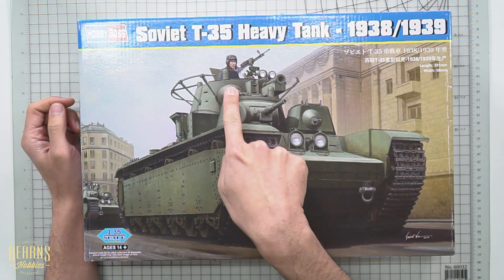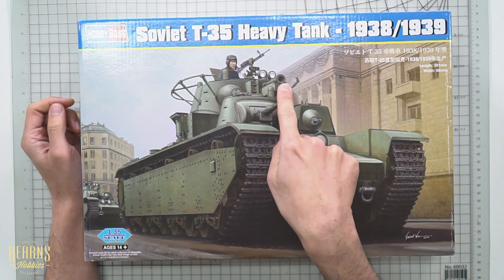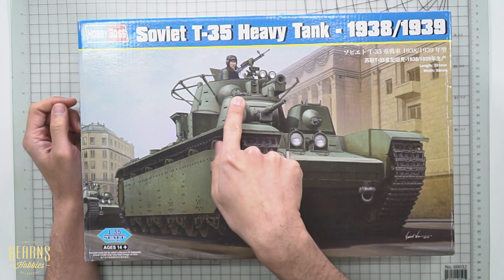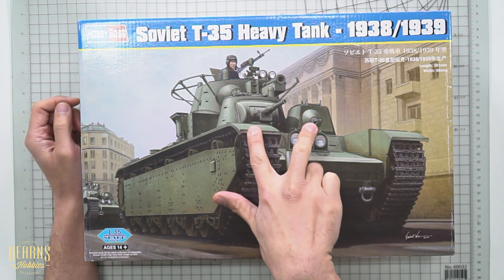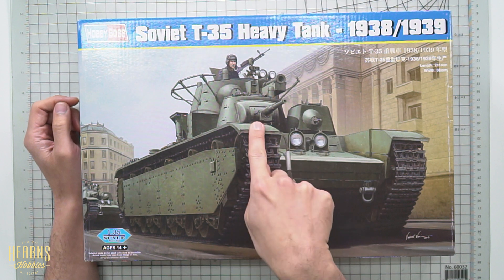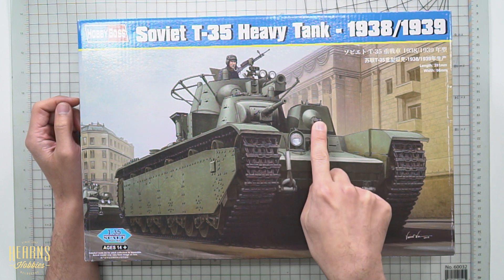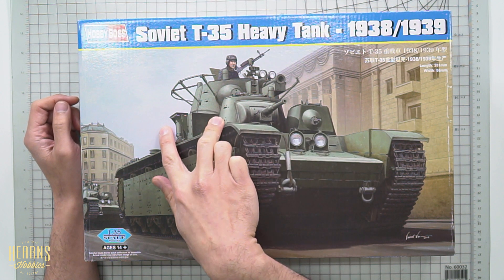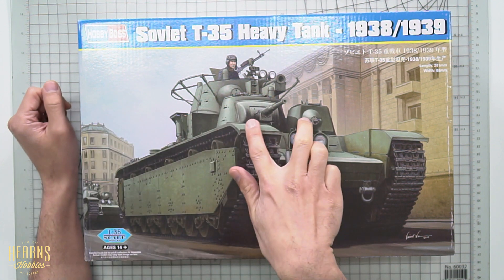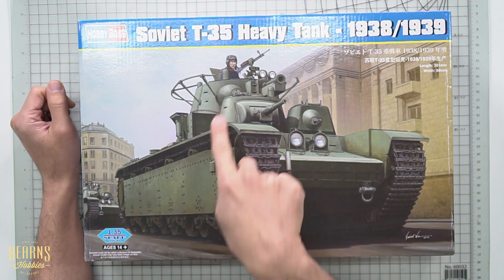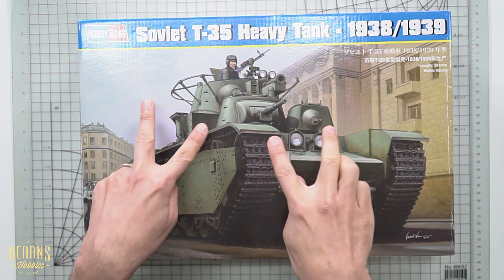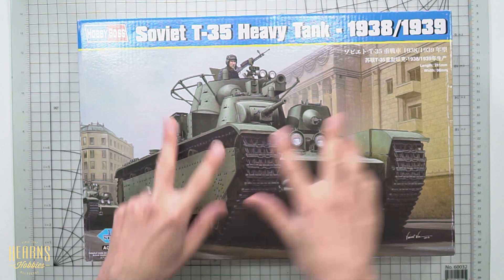So here we have main turret on the top with a 76mm gun. That's the main armament with a ball-mounted machine gun. And then at the front and the back they had a pair of turrets. So there's a 45mm gun here and machine gun mounted turret here. And identical across the back as well. Asymmetrical pattern. So they had the machine gun on this side and the gun on the other side.